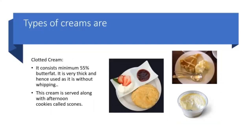Another type of cream is clotted cream, which consists of a minimum 55% of butter fat. It is very thick and hence it is used as it is without whipping. Clotted cream is served along with afternoon cookies called scones. As shown in the picture, it can also be served along with tarts as a condiment.